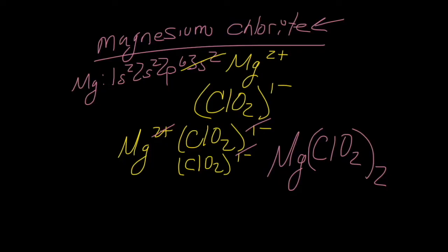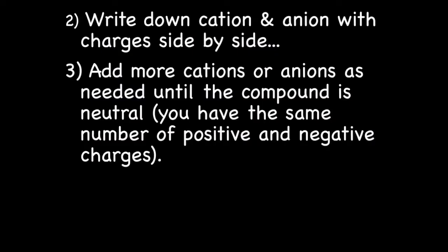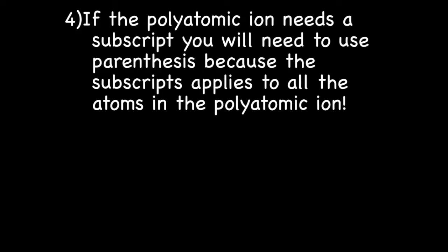I got a little overexcited and did the whole problem without having you write down the notes. You can write down the steps you're supposed to do. Write down the cation and the anion with charges side by side, exactly like you do with simple ions. They're simple ions. It just looks different. Acts the same. Then add more cations or anions as needed until the compound is neutral. You have the same number of positive and negative charges. And then if the polyatomic ion needs a subscript, you will need to use parentheses because the subscript applies to all the atoms in the polyatomic ion.